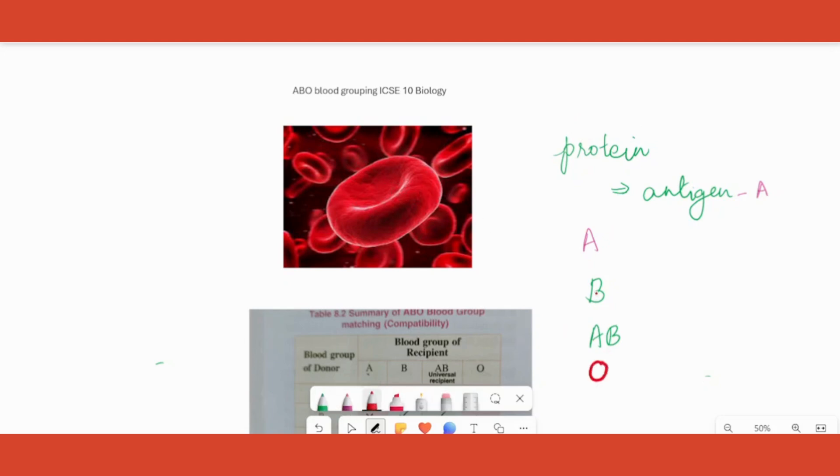So depending on the antigen which is basically a protein present on the RBC surface, we name the blood group as A, B, AB, or O. This is on the surface of RBC. The whole thing, RBC, is present in plasma, which is the liquid part of the blood. Corresponding to which antigen is on the surface, there is an antibody present in the plasma.